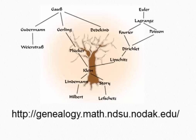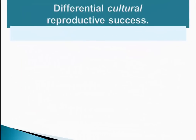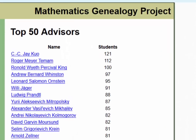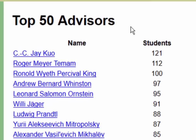We can illustrate this through the Math Genealogy Project, an excellent example of differential cultural reproductive success, resulting in cultural offspring rather than genetic offspring. The project lists mathematics advisors by how many PhD students worked under them. CCJ Kool is at the top of the list with 121 PhD students, which might not seem that impressive at first.